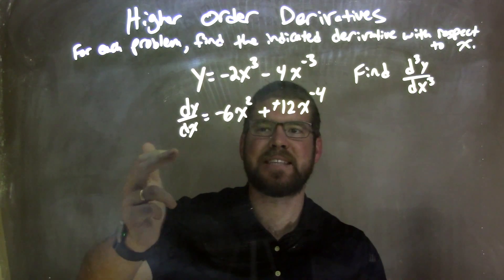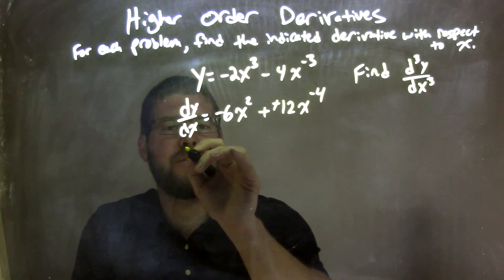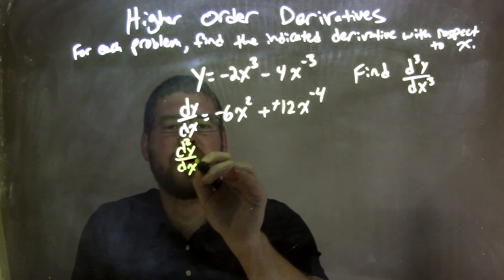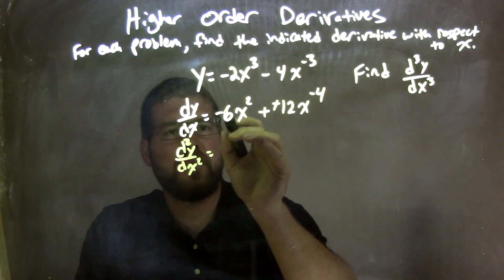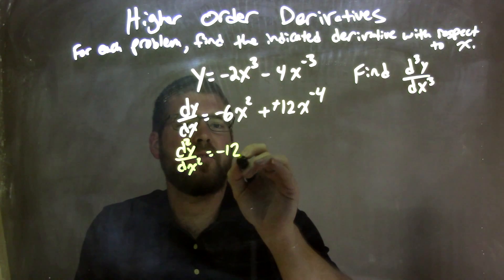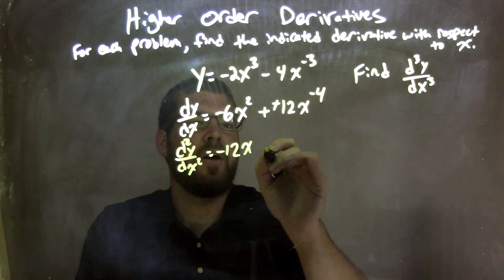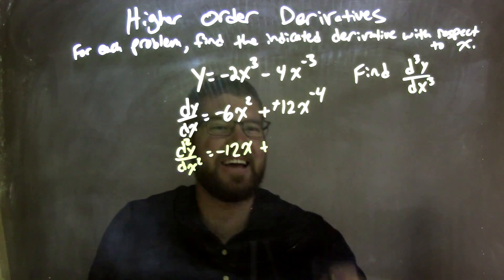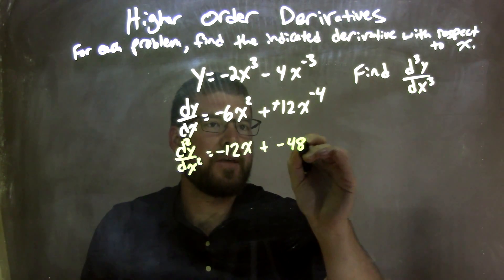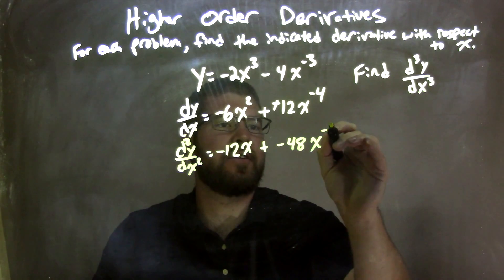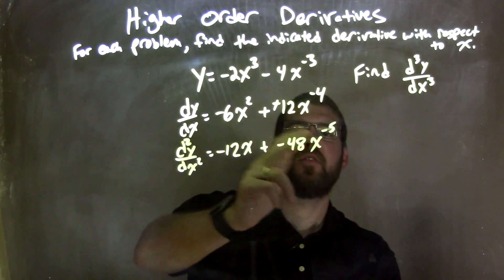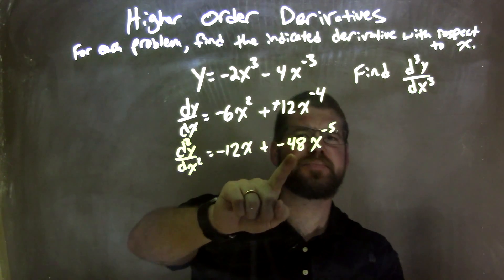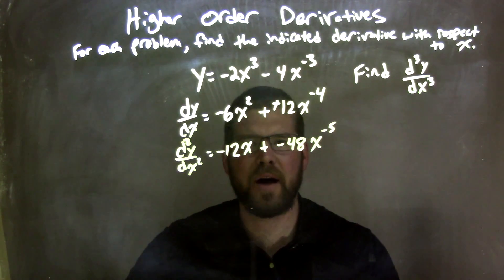Now let's find the second derivative. d²y/dx² is equal to: 2 comes down, 2 times negative 6 is negative 12x to the first power. Plus, negative 4 times 12 is negative 48, and that's x to the negative 5th power. So the negative came down, negative 4 times 12 is negative 48, and we subtract the exponent by 1 to get negative 5.